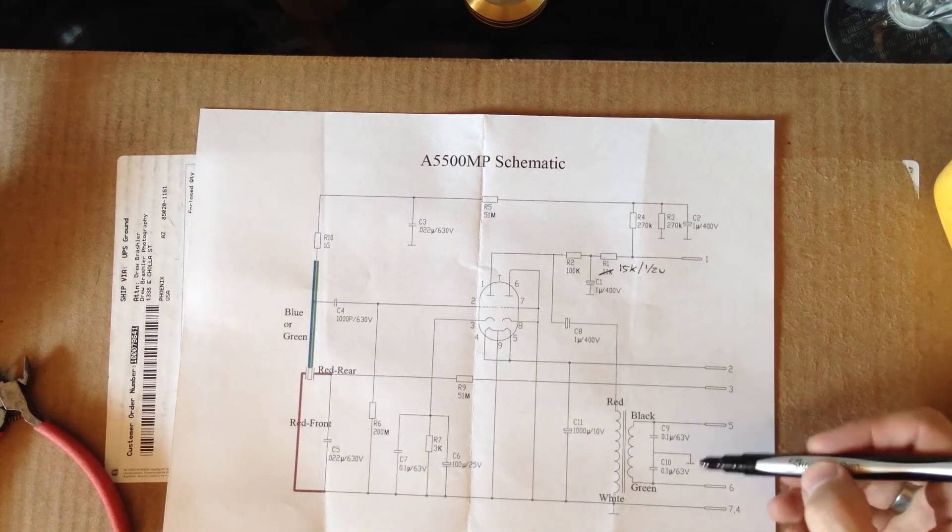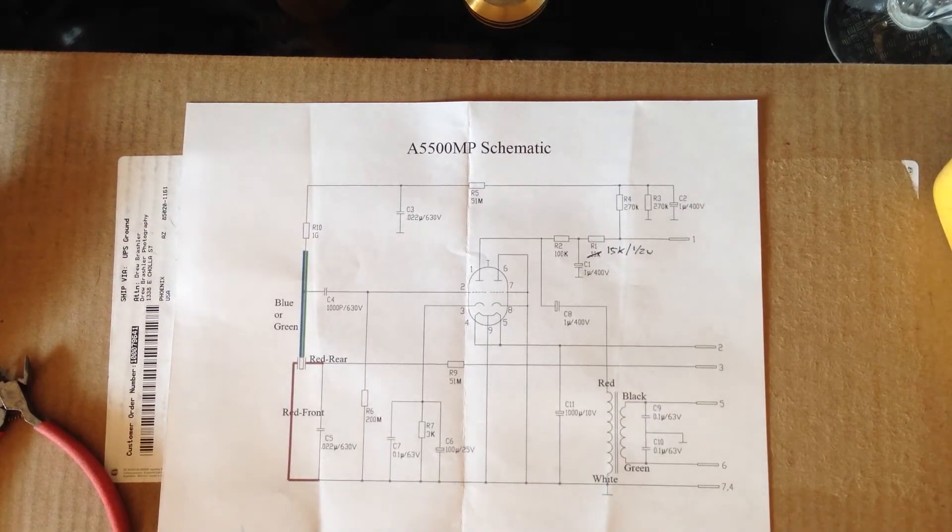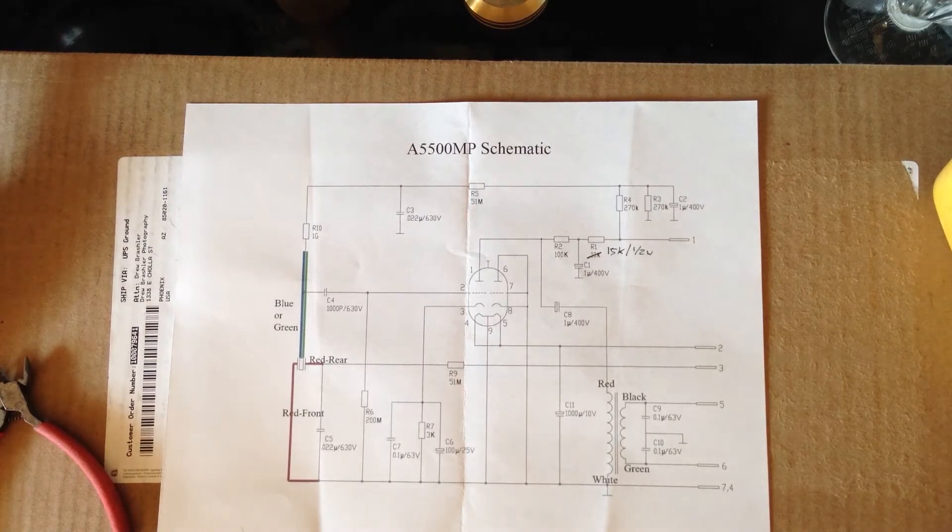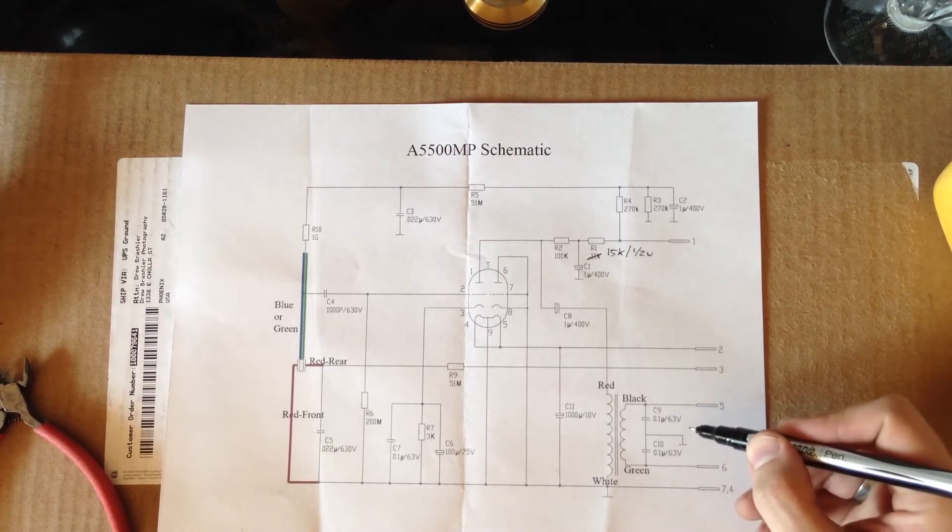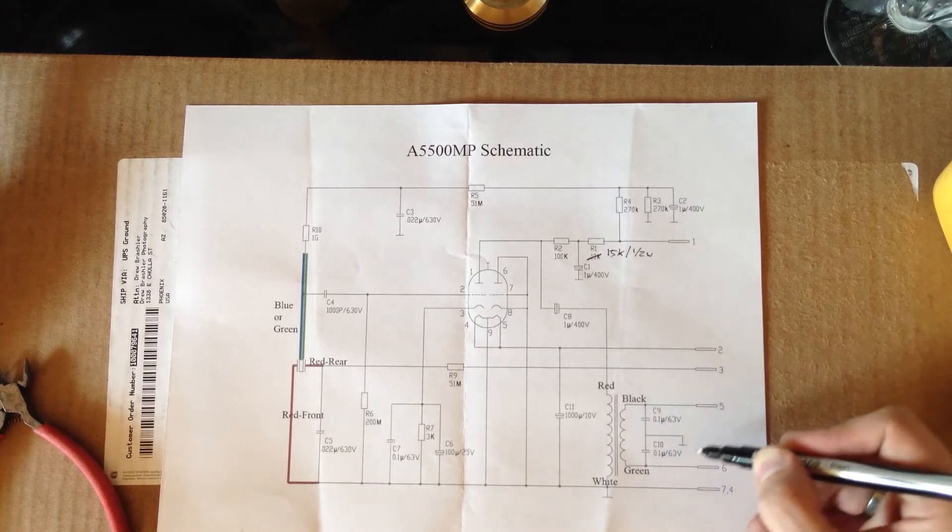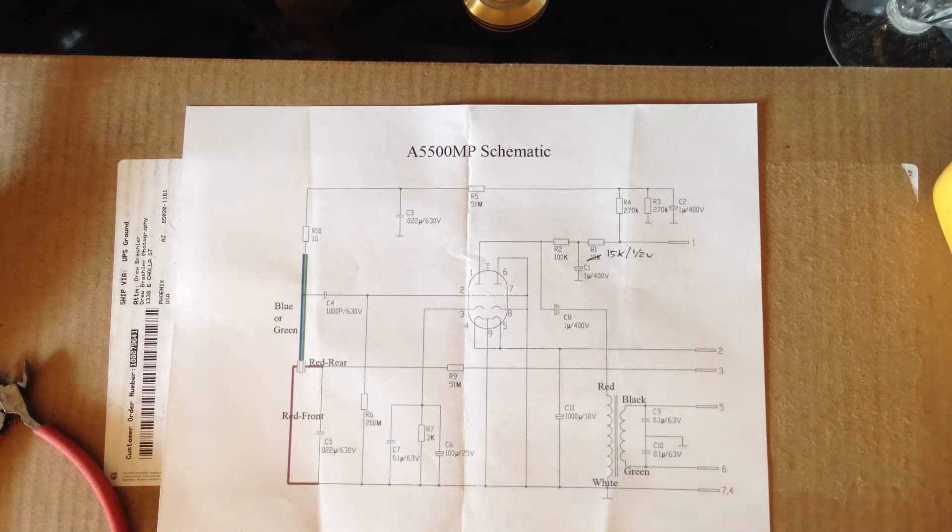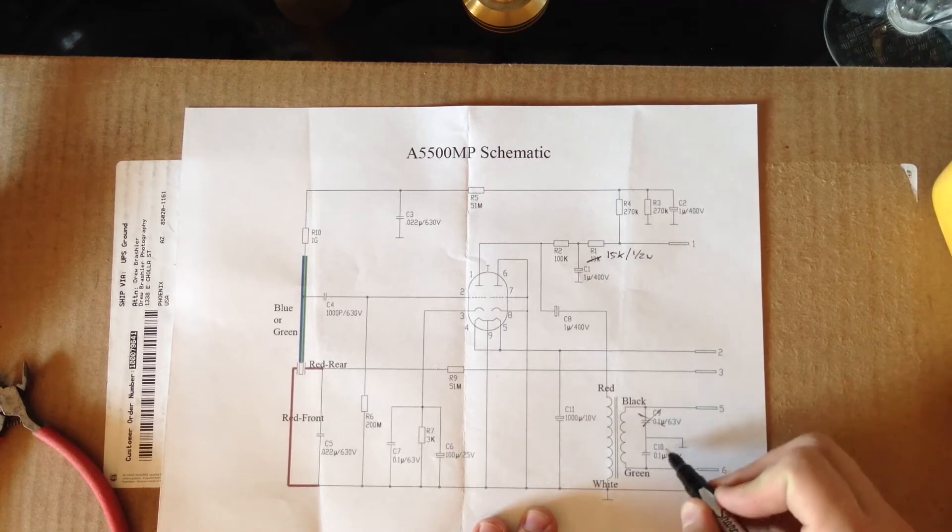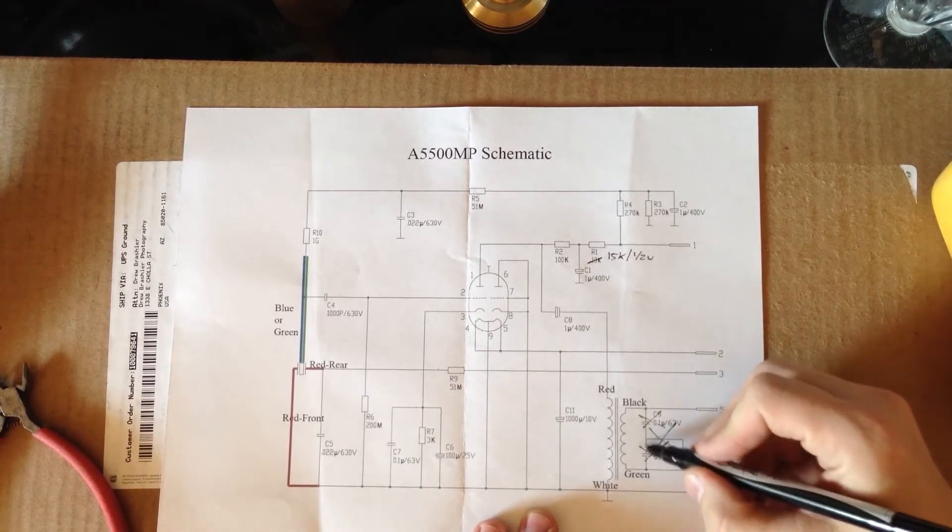Down here we have C9 and C10. These are capacitors used for limiting the amount of RF interference that is coming into the microphone. These values are pretty high for doing that, so what ends up happening is it alters the high frequency portion of the microphone and makes it not sound as good as it can. So we are actually just going to be taking these out. All these three traces in C9 and C10 are going away.